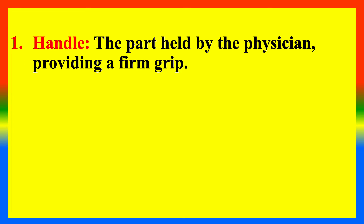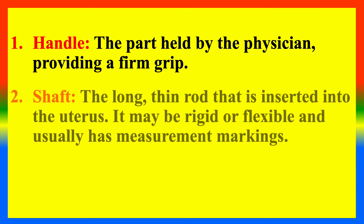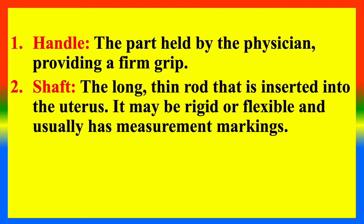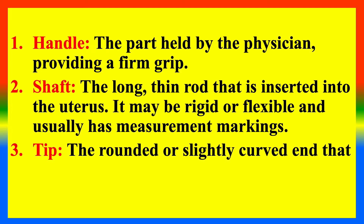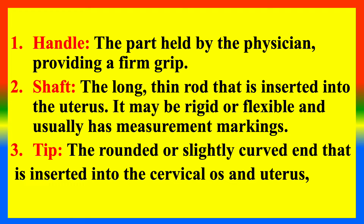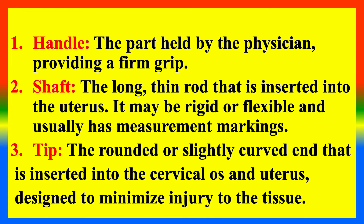The uterine sound has three main parts: first, the handle — the part held by the clinician, providing a firm grip; second, the long thin rod that is inserted into the uterus, which may be rigid or flexible and usually has measurement markings; and third, the tip — the rounded or slightly curved end inserted into the cervical os and uterus, designed to minimize injury to the tissue.